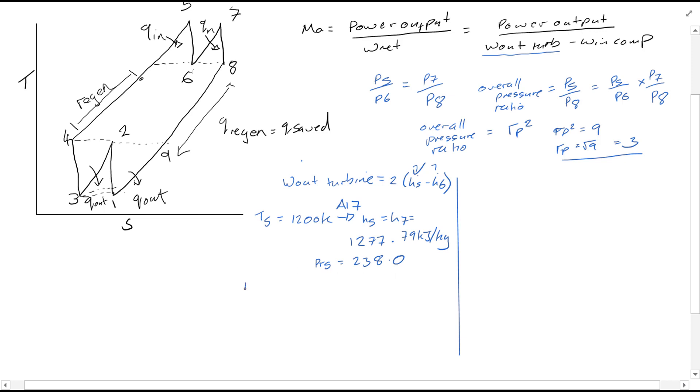So then PR6 can be calculated. Pressure ratio P6 over P5 is equal to PR6 over PR5. So then subbing in this value, 1 over 3 from here times 238 will give you a value of PR6 equal to 79.33.